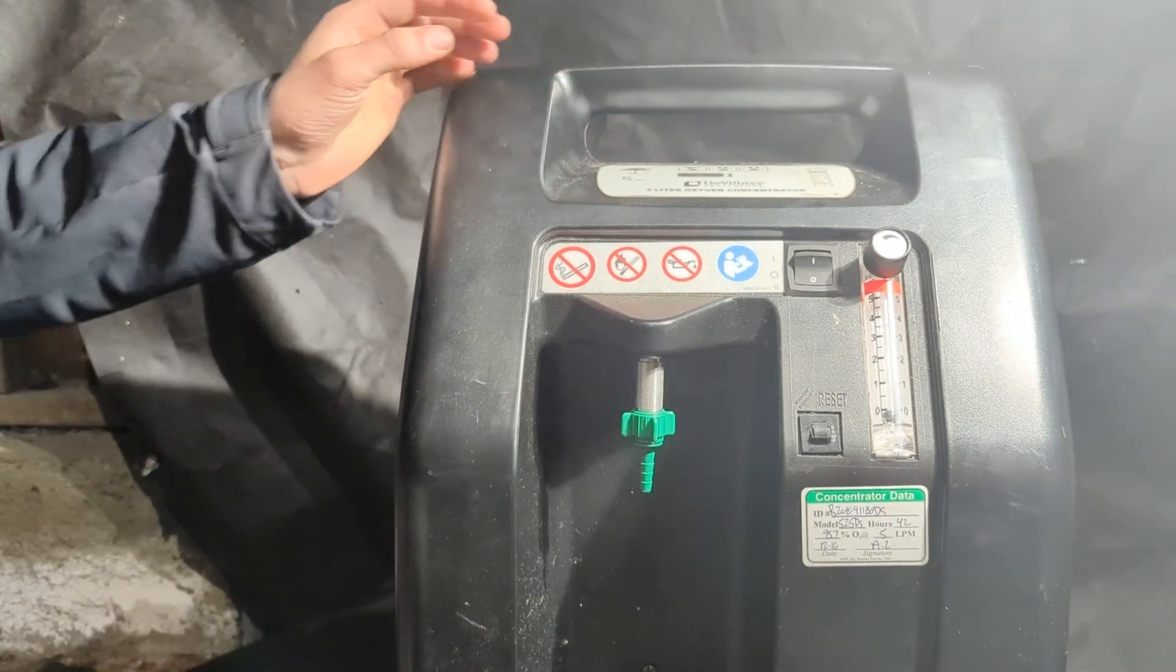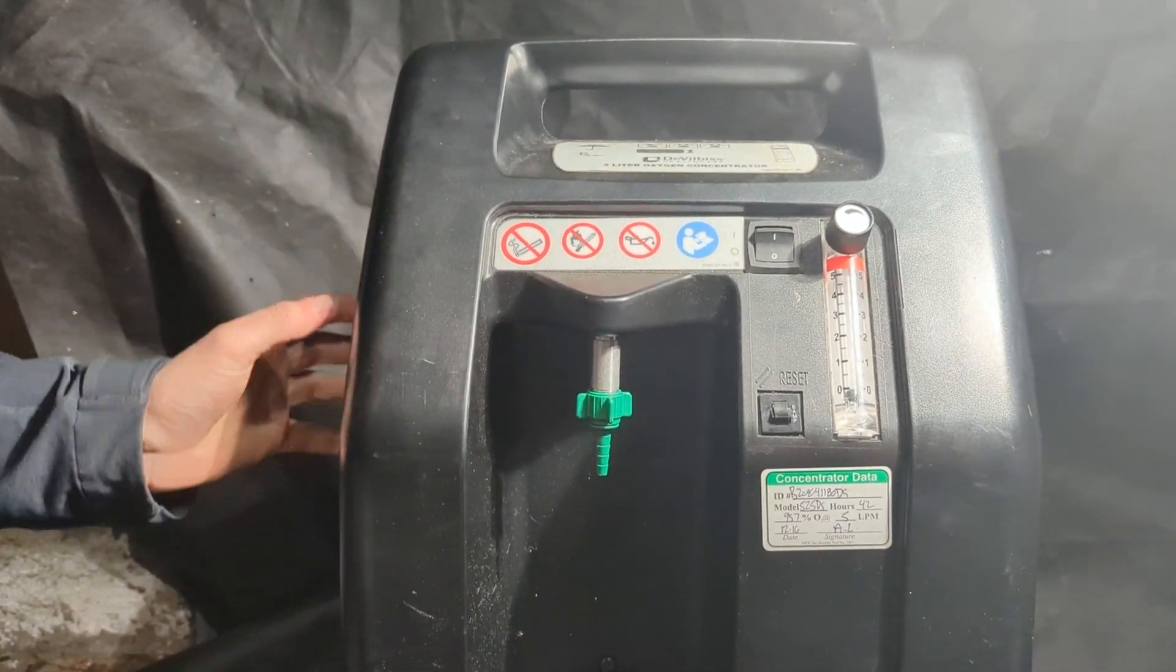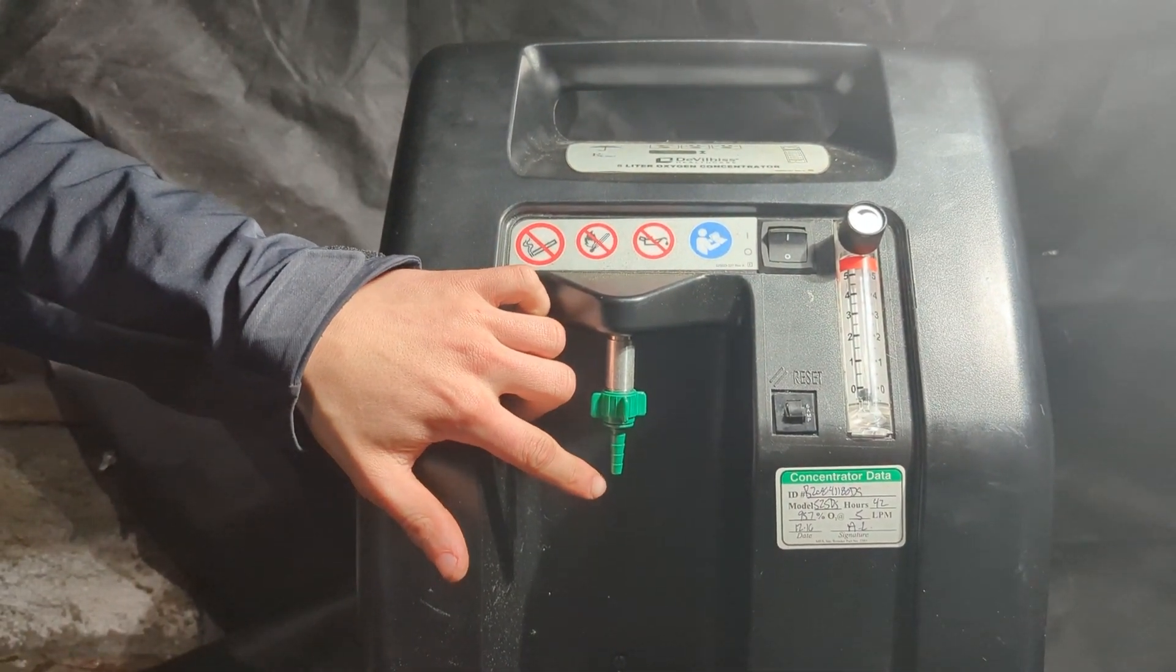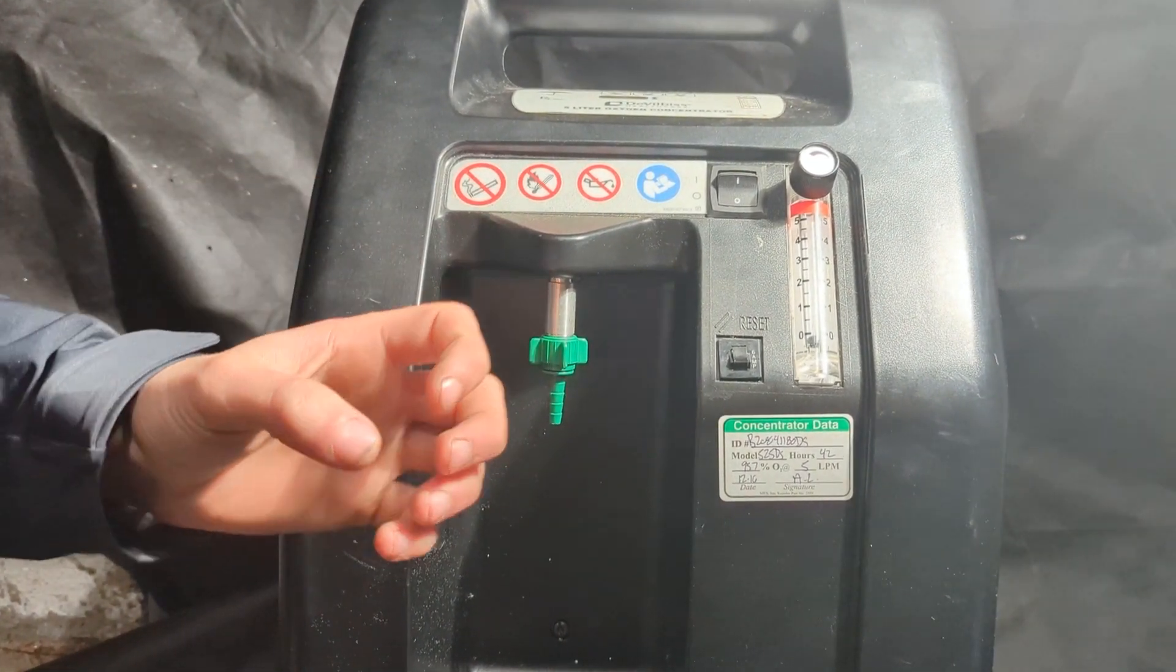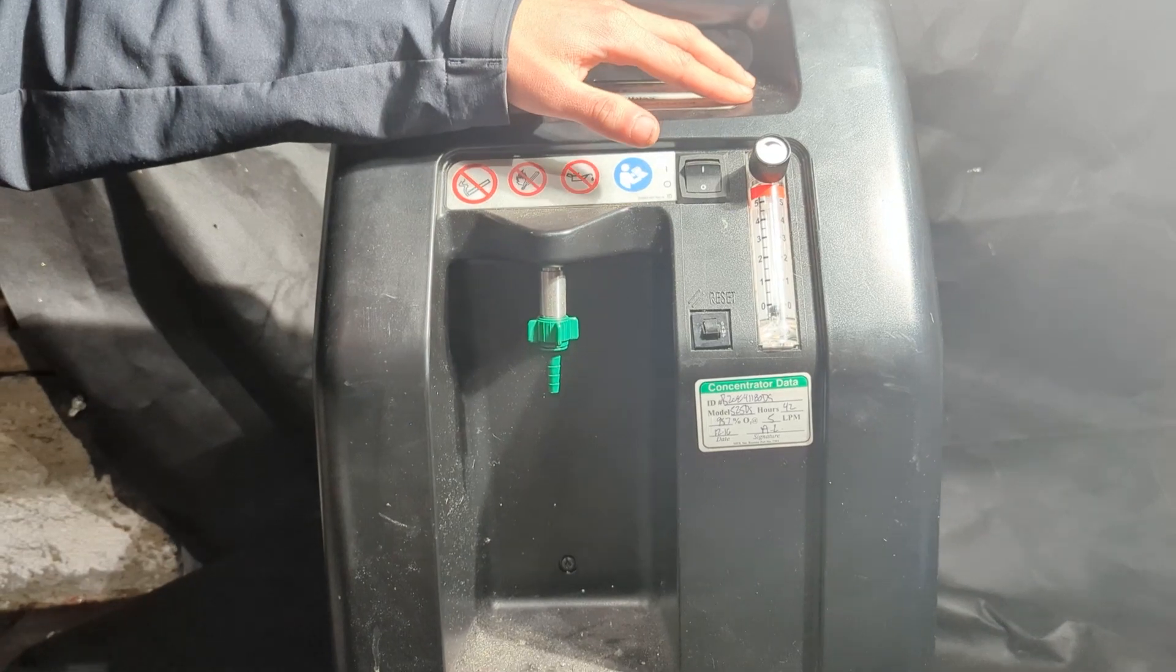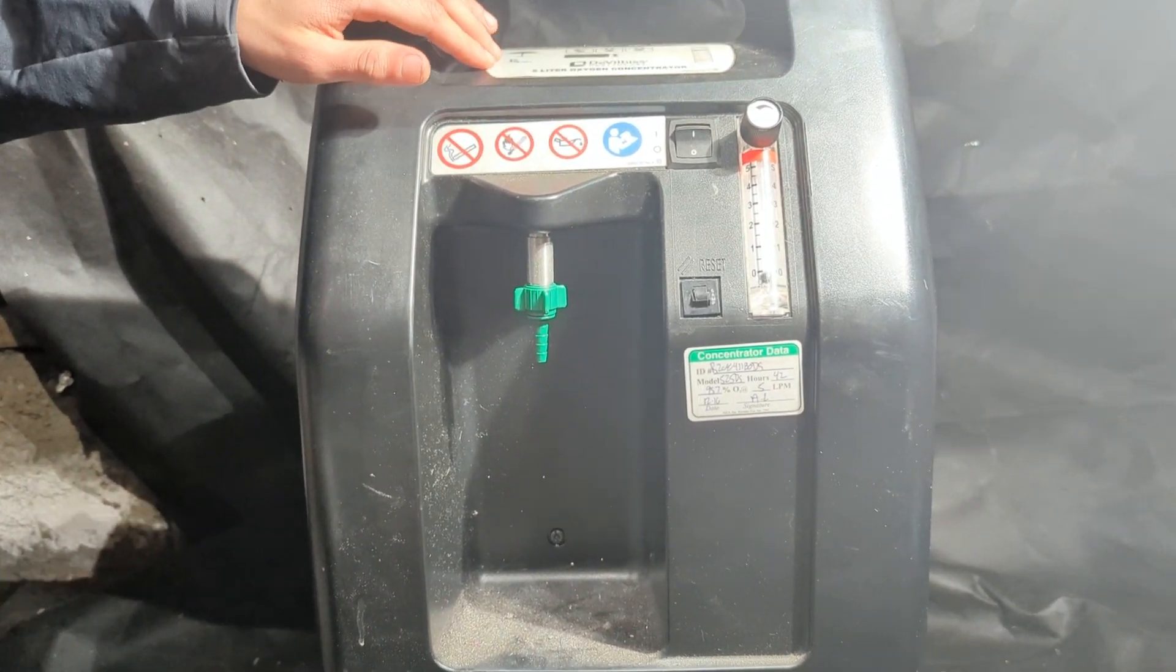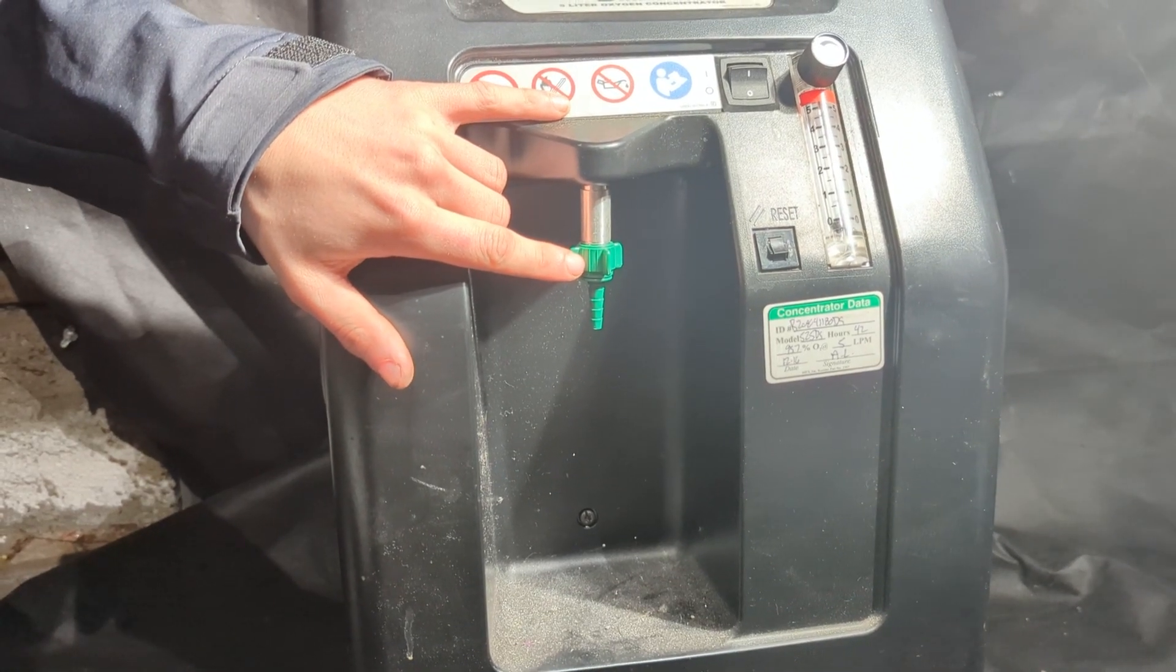It takes zeolite materials and molecular sieves inside the machine, pumps regular air through them, nitrogen gets absorbed by the zeolite materials, and oxygen is pumped out the end. They call it a pressure swing oxygen concentrator because there's two molecular sieves, and the compressor switches between the two of them. When one sieve is saturated with nitrogen gas, it switches to the other one and bleeds out the excess nitrogen into the air. That's how they keep fresh oxygen coming out the nozzle 24/7.